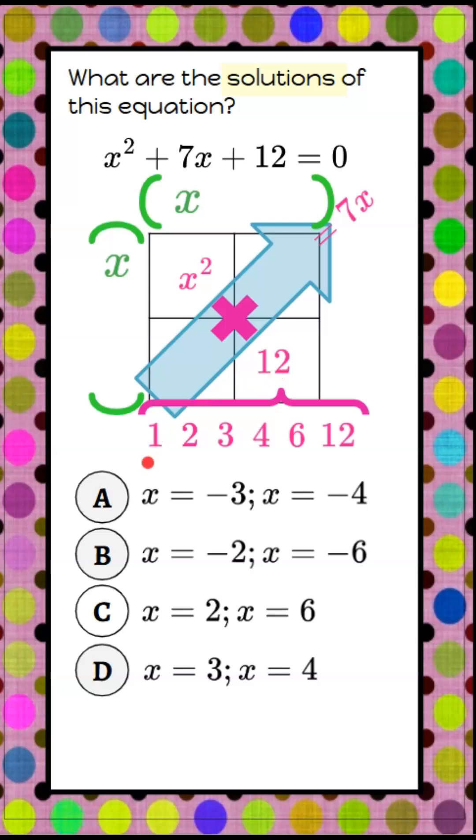Okay, we know that 3 times 4 is 12, and 3 add 4 gives us our 7. So our terms that we're looking for in these boxes are going to be 3 and 4.